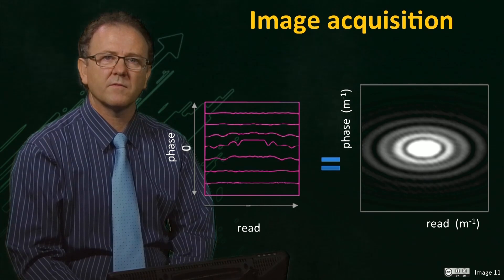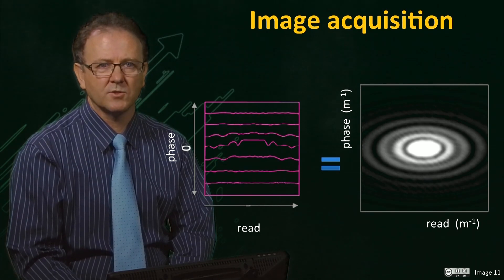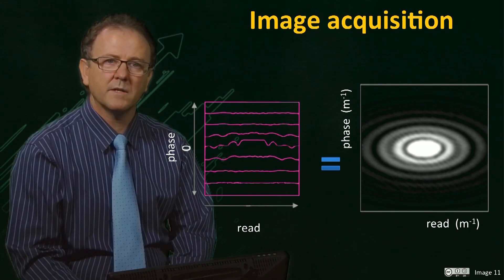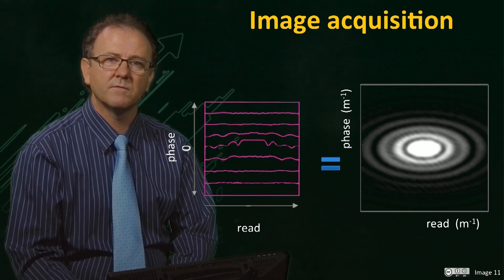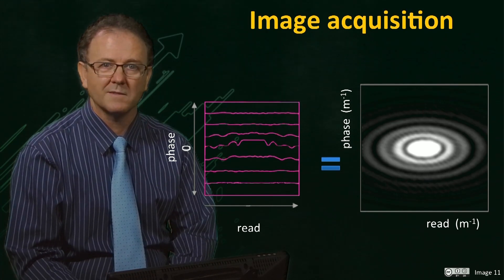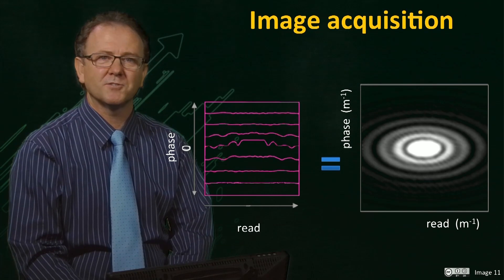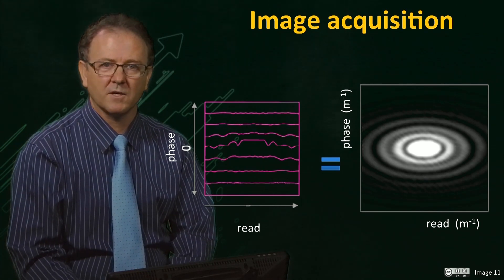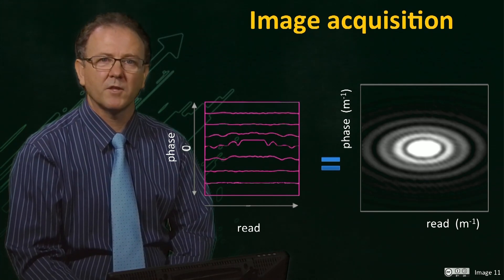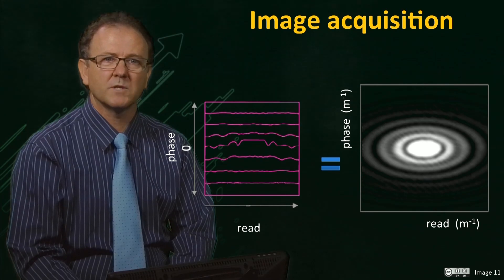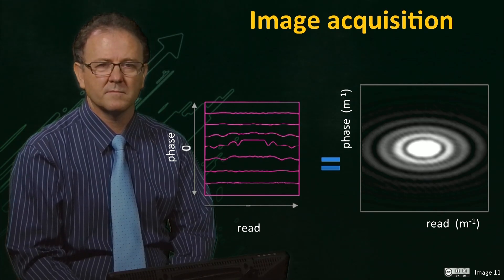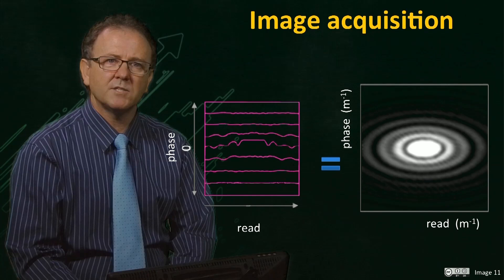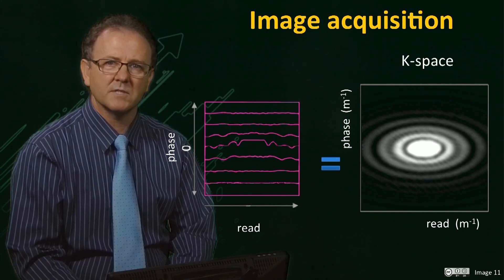This results from the fact that the echo, which usually has units of time, when acquired in the presence of a field gradient is converted to distance to the minus one. You might like to convince yourself of this by multiplying the units of time, seconds, by the units of field gradient, which are hertz per centimeter. This representation of the raw data is known as k-space.